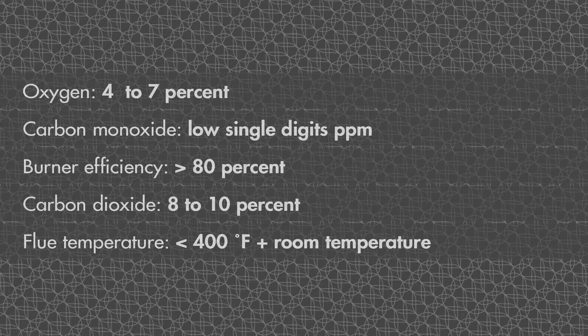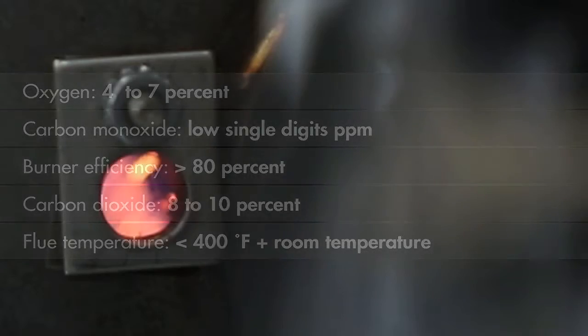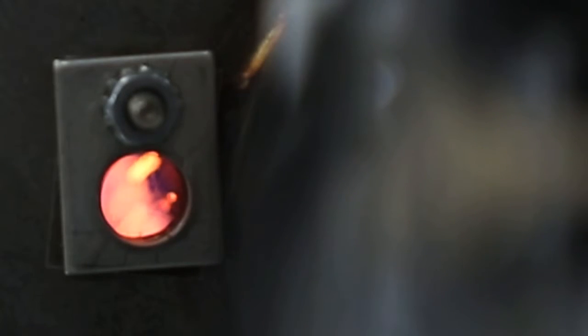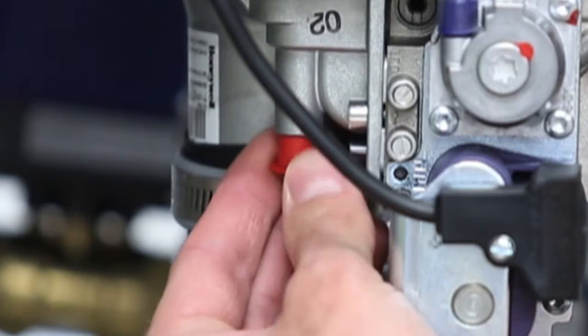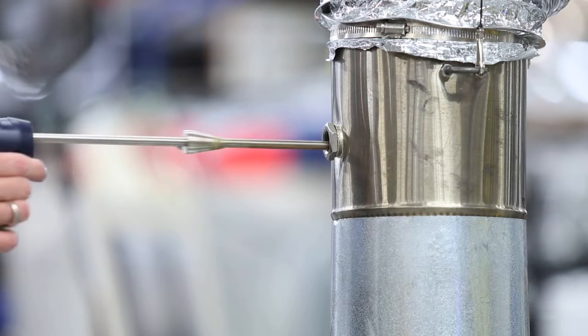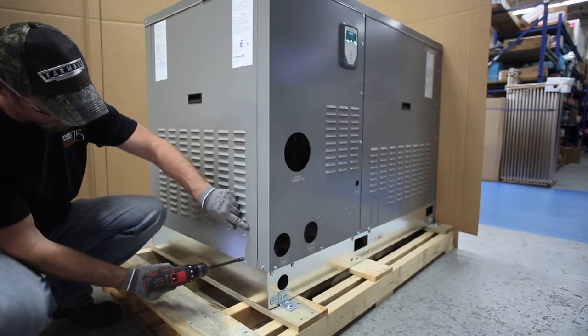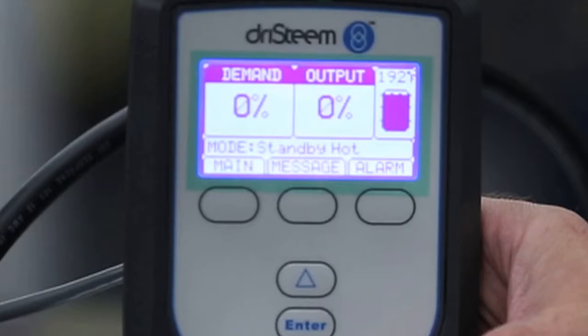When the combustion analyzer shows acceptable measurements and all burners have orange flame, the burners are tuned. Replace the throttle screw cap, remove the probe from the flue, replace the panels, and return the humidifier to operation.